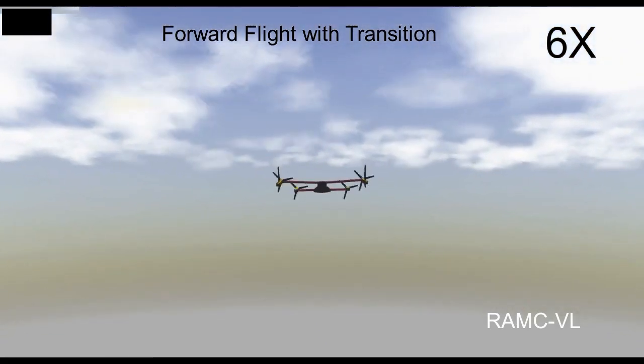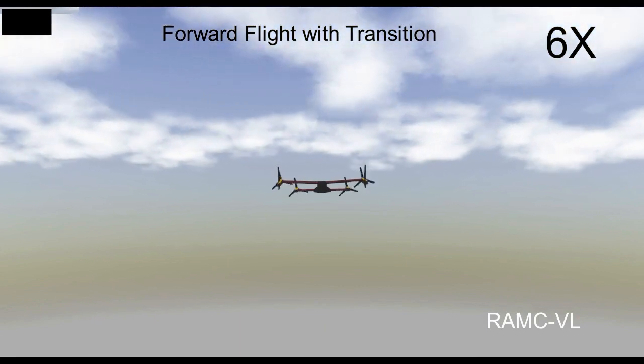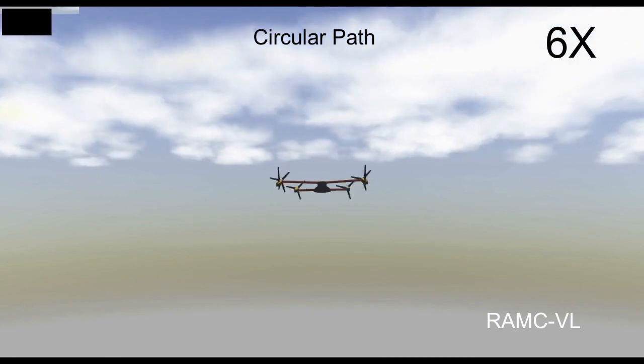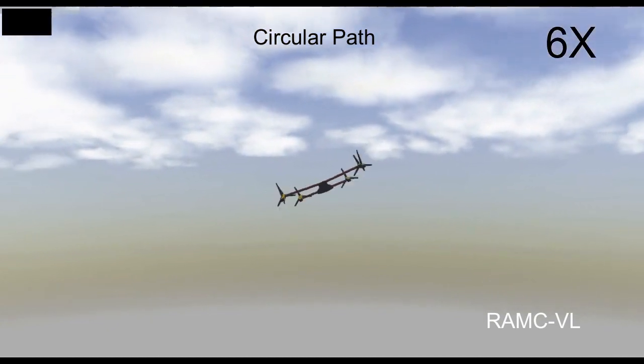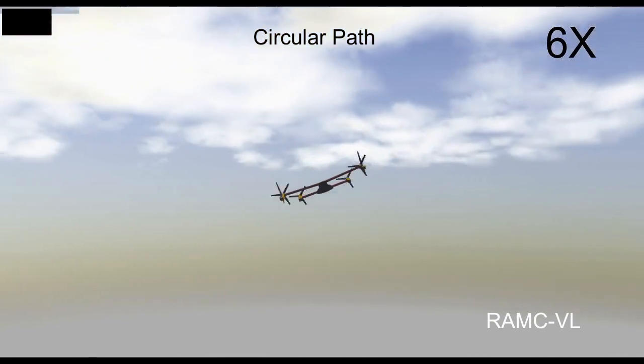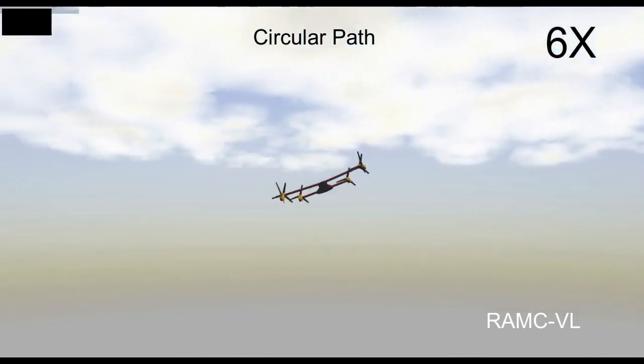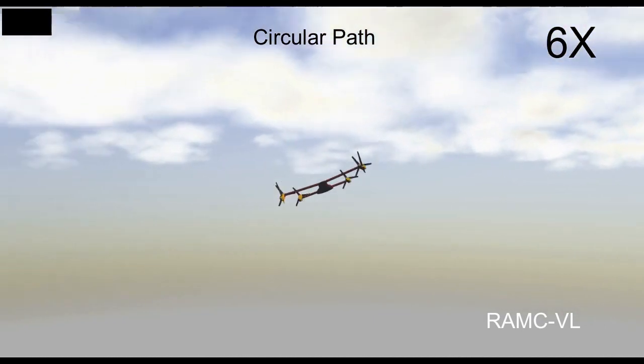In the second stretch, the quad-CP VTOL UAV reaches cruise speed and performs forward flight. In the third stretch, the quad-CP VTOL UAV is required to perform a circular path coordinated level turn, projected in the X-Y plane, with constant velocity and maintaining altitude.